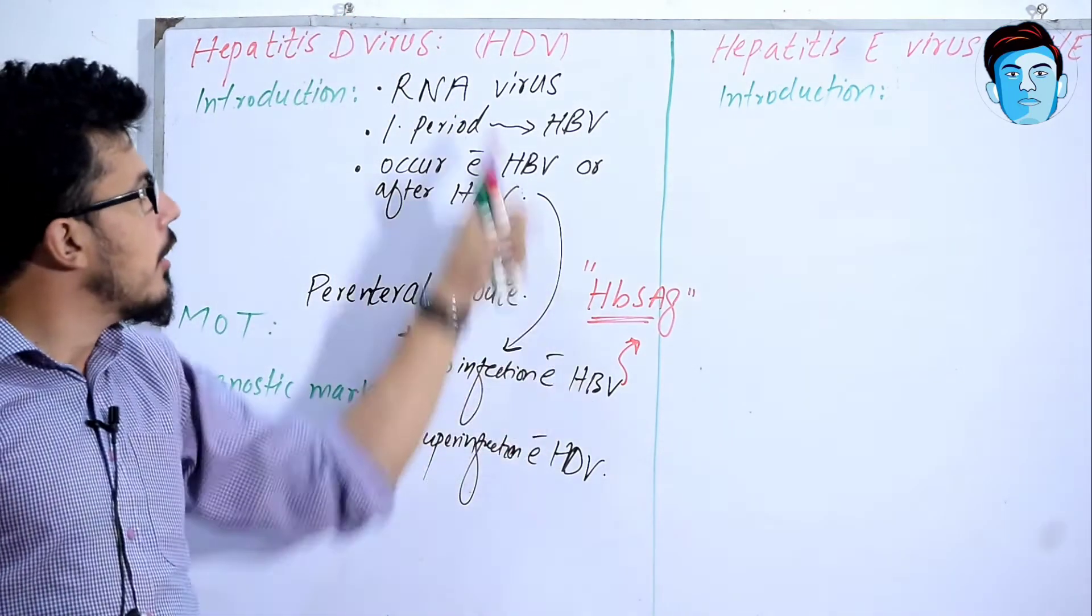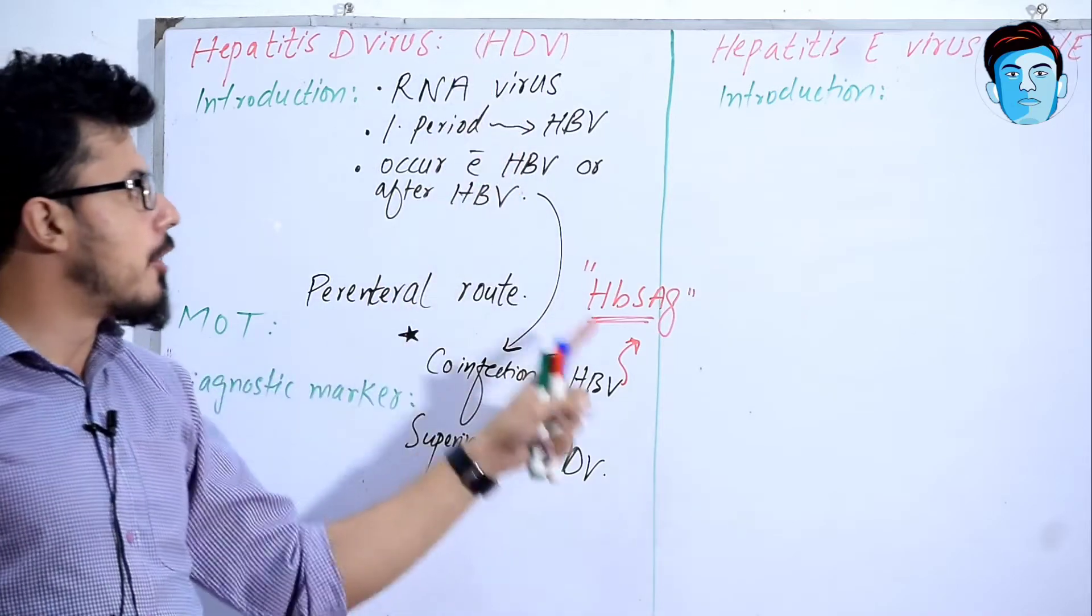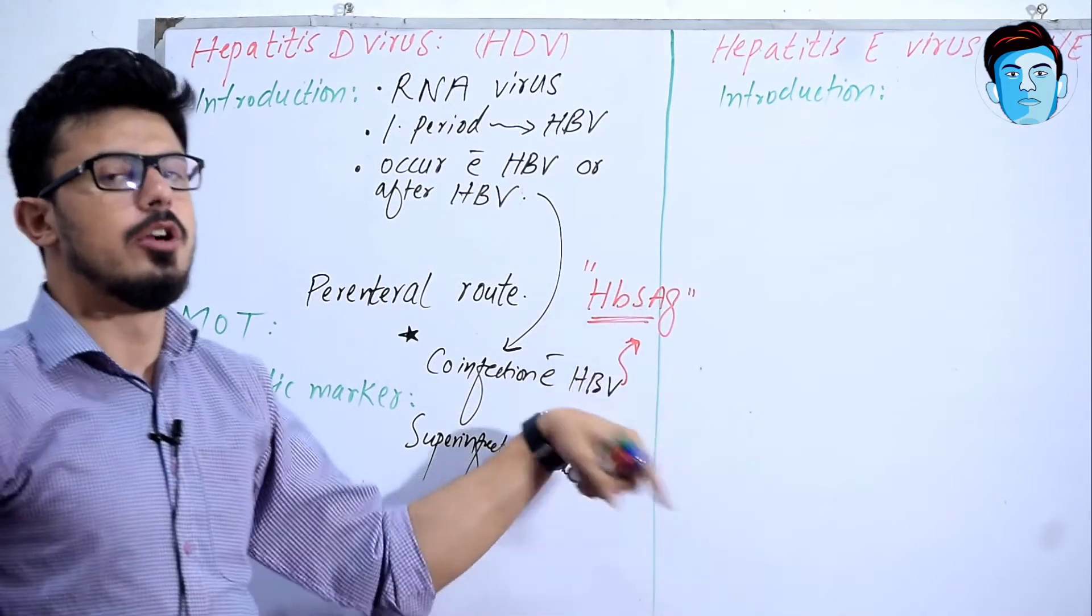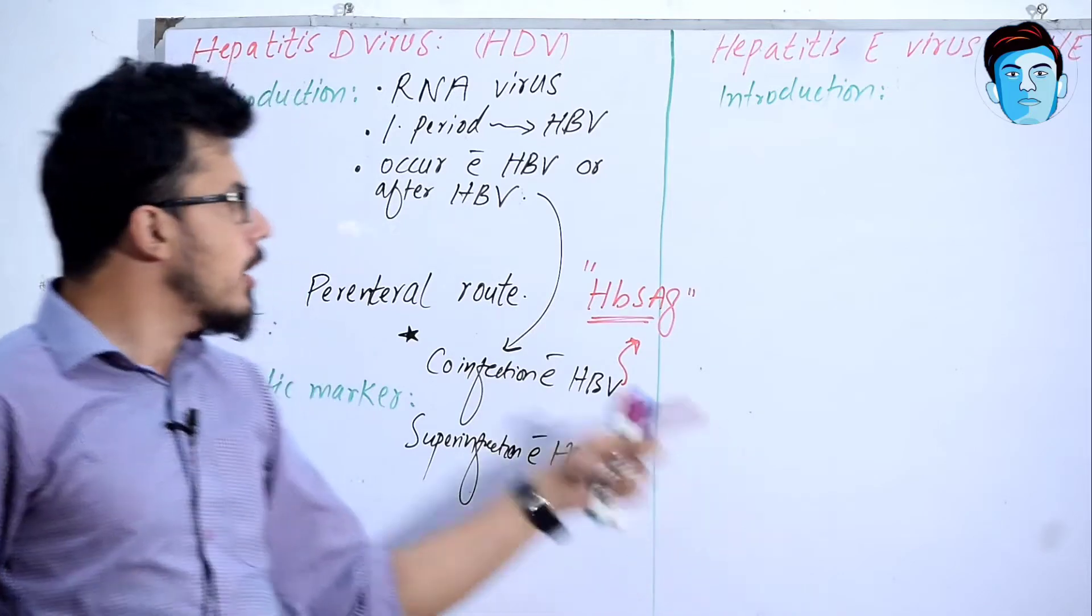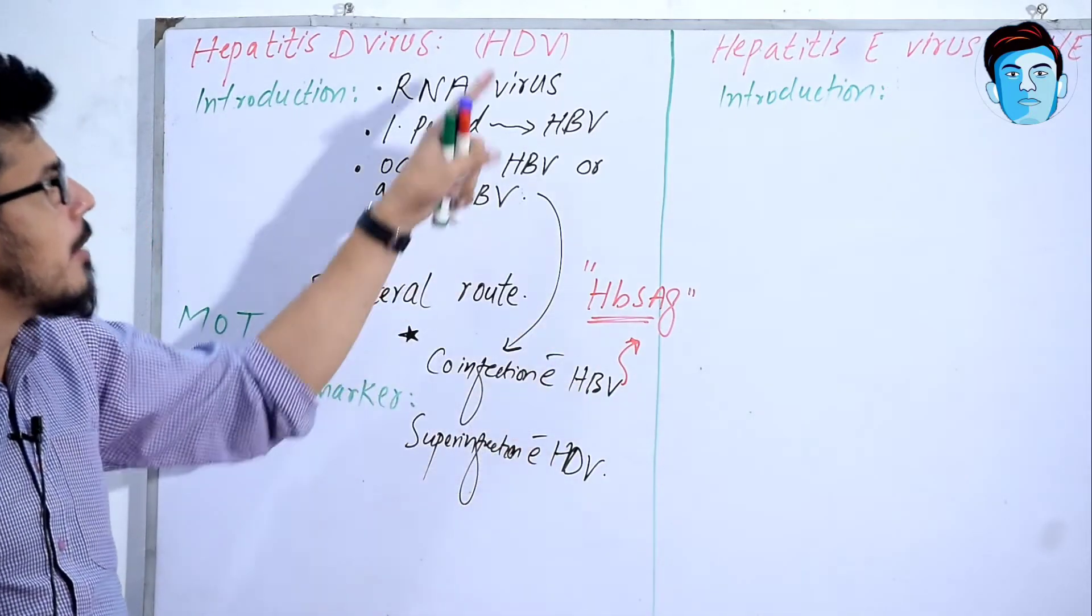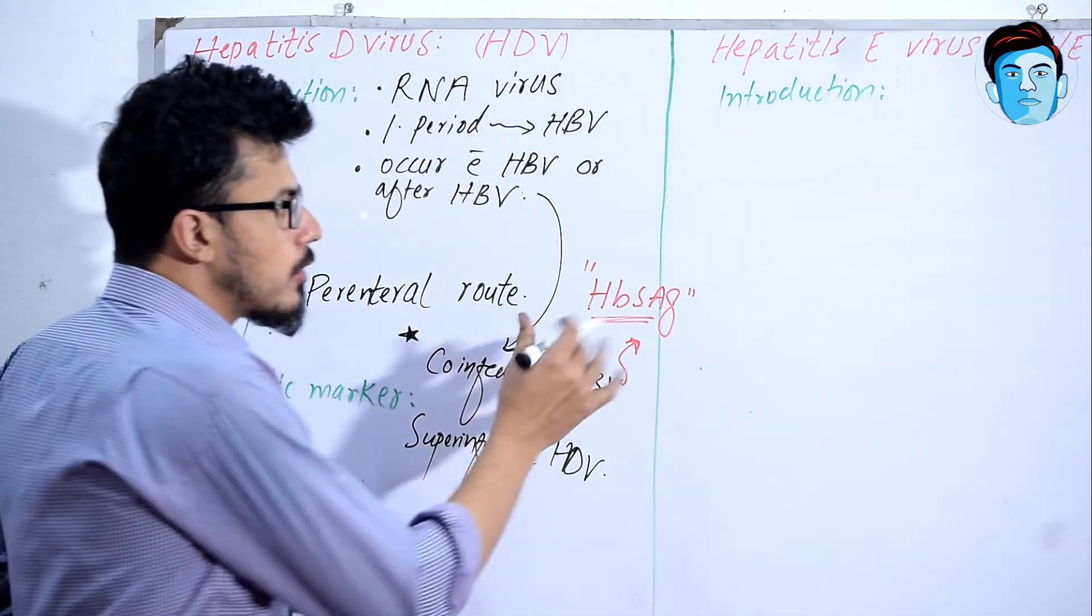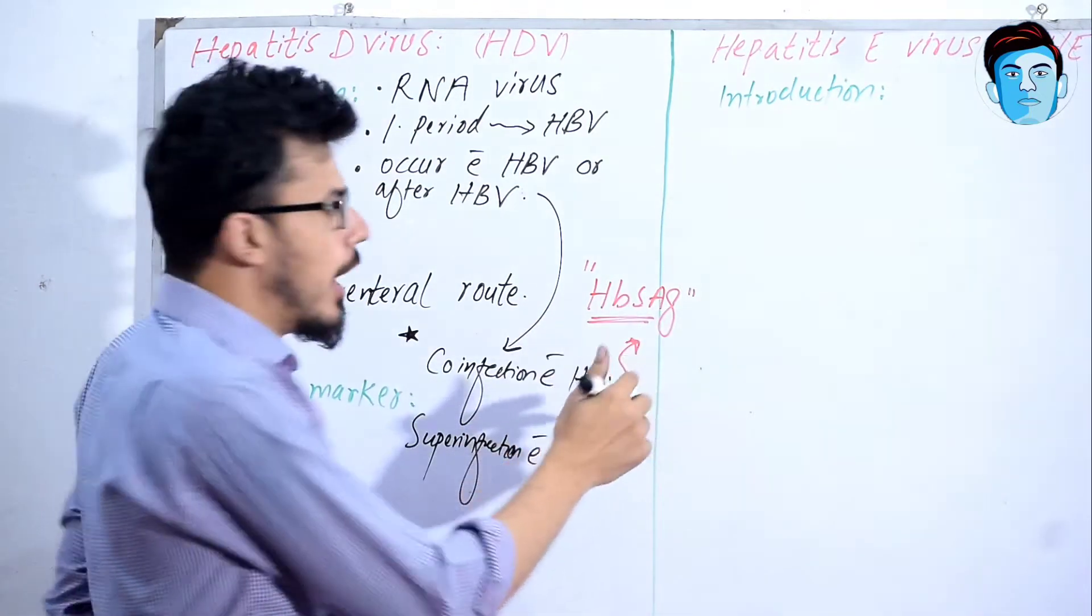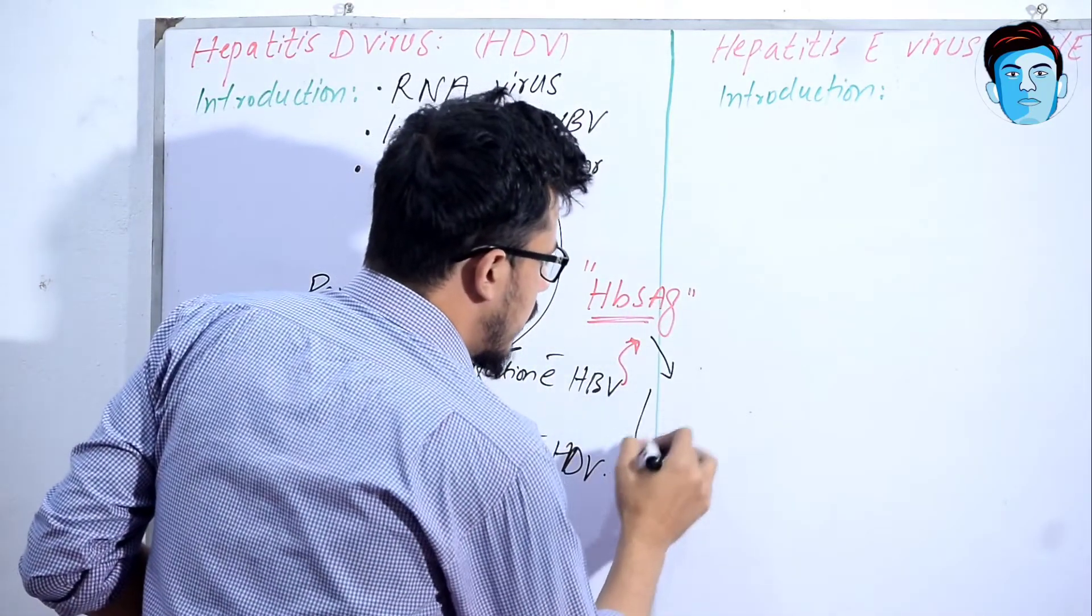This Hepatitis D virus requires Hepatitis B surface antigen to replicate its genome. Hepatitis B virus and Hepatitis D virus work together during infection, and ultimately it will lead to fulminant hepatitis.